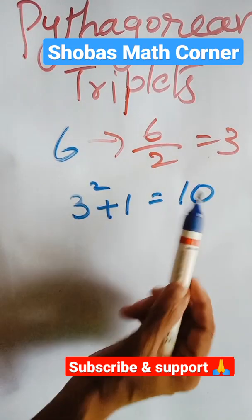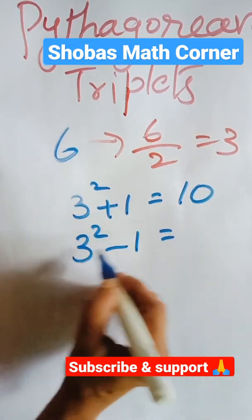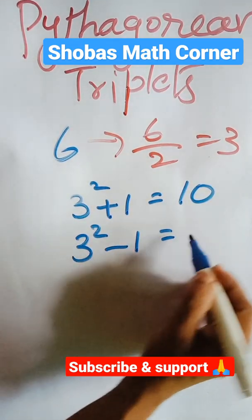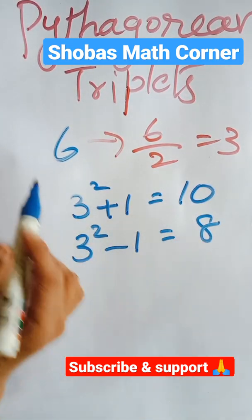So my one number is ready, it is 10. How should I find the next one? 3 square minus 1. Subtract 1 to this square, I'll be getting 8. So my other two numbers are 10 and 8.